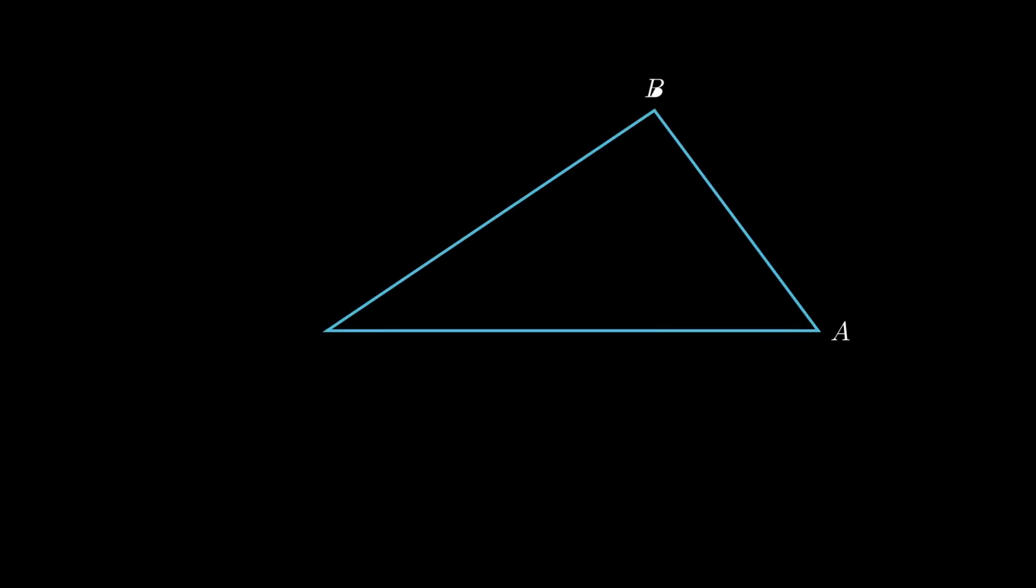Consider a triangle ABC such that P is the midpoint of side BC. A segment from midpoint P is extended such that it is parallel to side AC and intersects at point Q on side AB. We need to prove that Q is the midpoint of side AB.